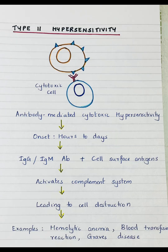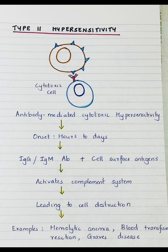Type 2 hypersensitivity reaction. This is also called antibody-mediated cytotoxic hypersensitivity, because it involves IgG or IgM antibodies attacking the cells and leading to cell destruction. The reaction occurs within a few hours to a few days after exposure to the antigen. IgG or IgM antibodies bind to the cell surface antigens, which activates the complement system or immune cells, leading to cell destruction. Examples include hemolytic anemia, blood transfusion reaction, and Graves' disease.